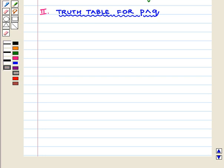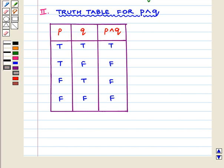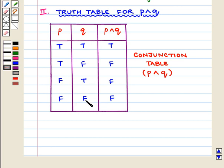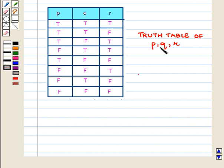In the truth table of P and Q or R, we will first find the truth value of P and Q. To write truth values of P and Q, we will take into consideration truth values of the P and Q columns only and we will leave the truth values of R. Now to write the truth values of P and Q, we take into consideration the conjunction table. If P is true and Q is true, P and Q will be true. If P is true and Q is false, P and Q will be false. If P is false and Q is true, P and Q will be false. And if P is false and Q is false, P and Q will also be false.